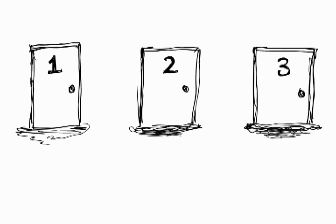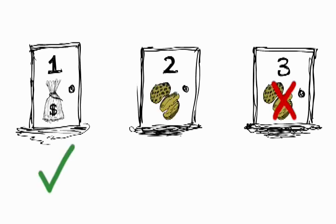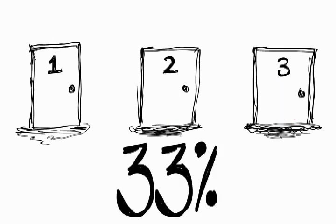Now, let's see the consequences of switching. Okay, worst case scenario. Let's say by chance you pick the cash door. That means by switching, you will end up with a peanut door. But the chance of you doing this is still 33%. Because it's only 33% that you will pick the cash door on their first go.